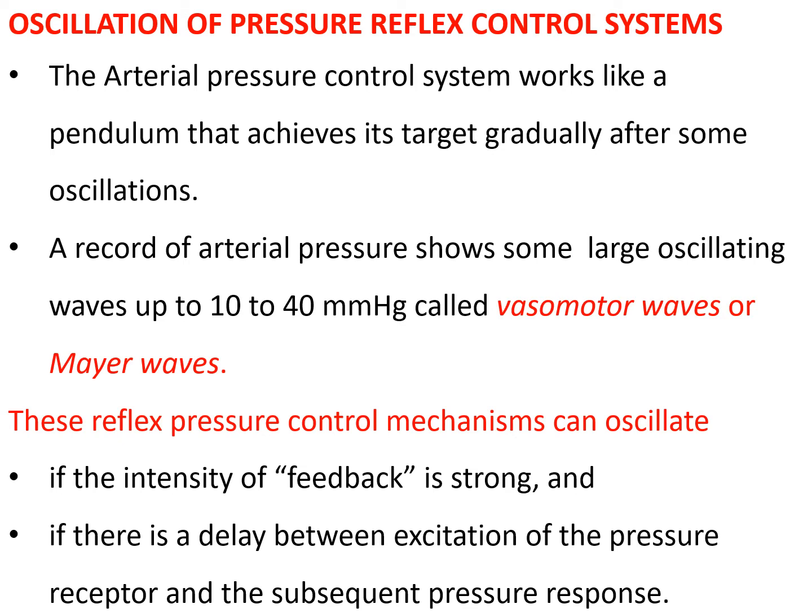Apart from respiratory oscillations, you can also see large oscillations of up to 10 to 40 mmHg in arterial pressure. These are called vasomotor waves or Mayer waves, and they are due to the working of the vasomotor center. Temperature regulating centers and other centers also show these oscillations when trying to reach the set point. Reflex pressure control mechanisms will oscillate if the intensity of feedback is strong.